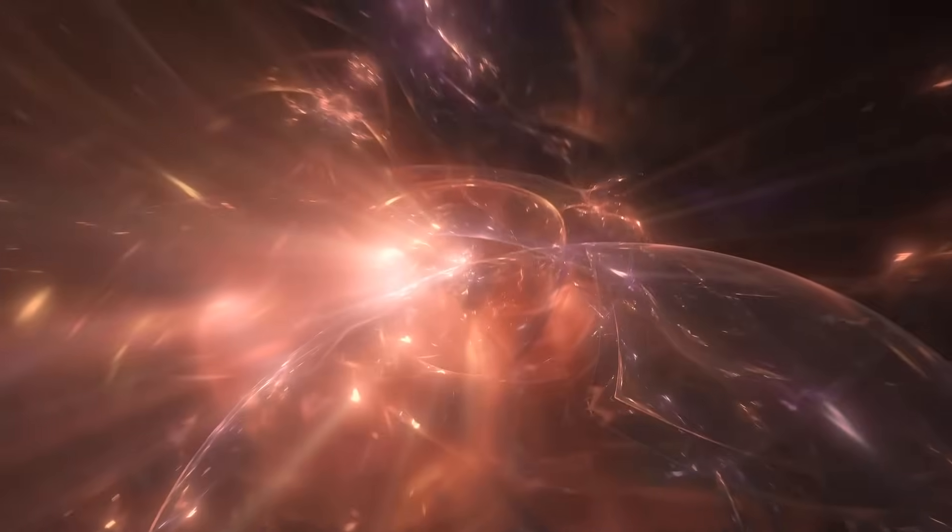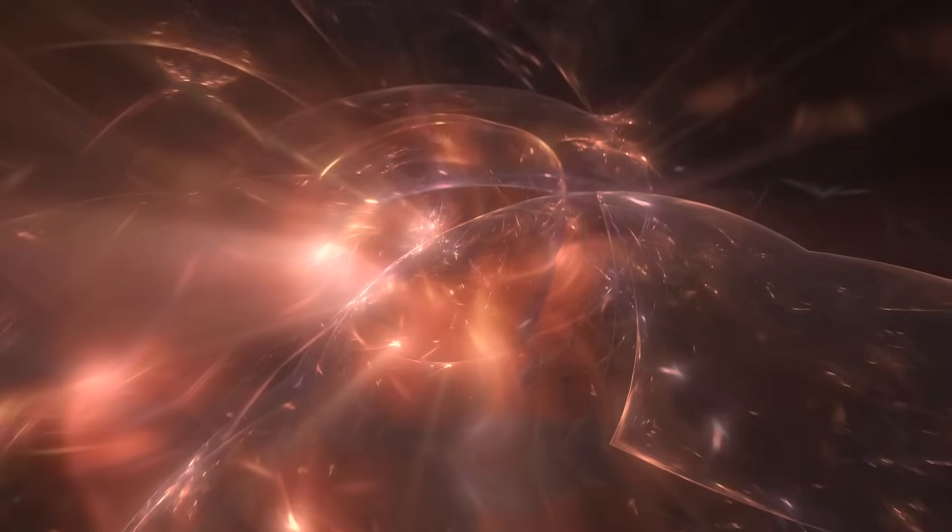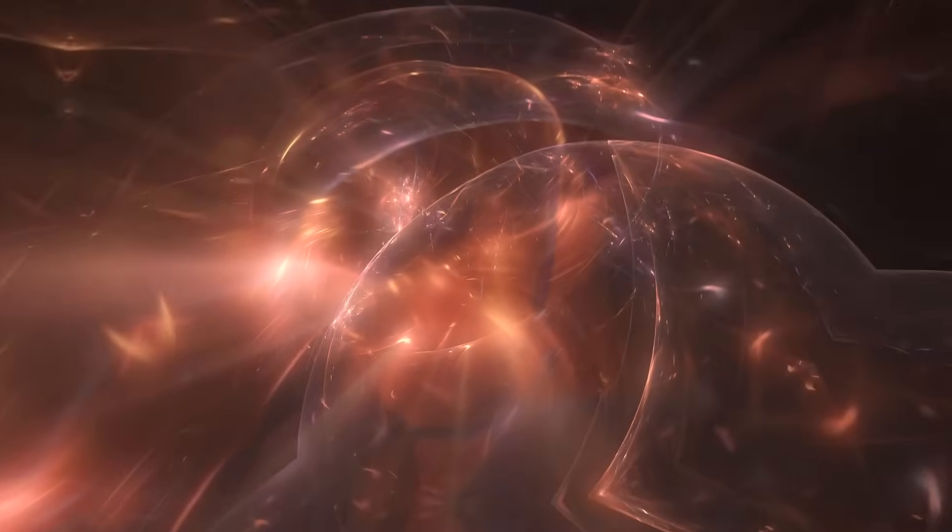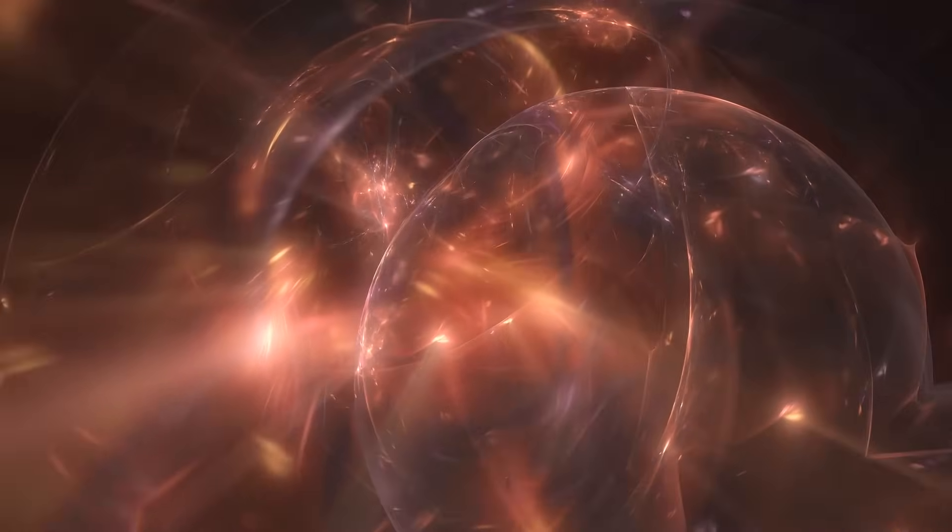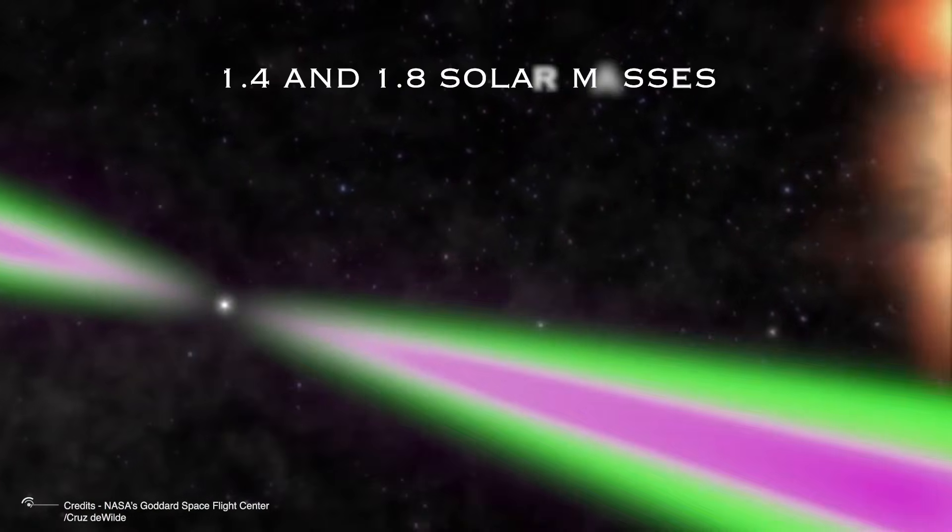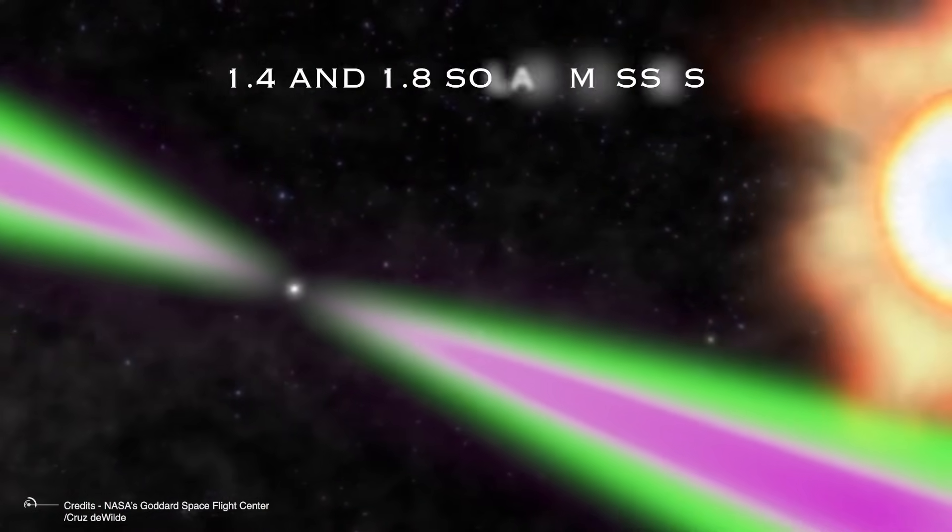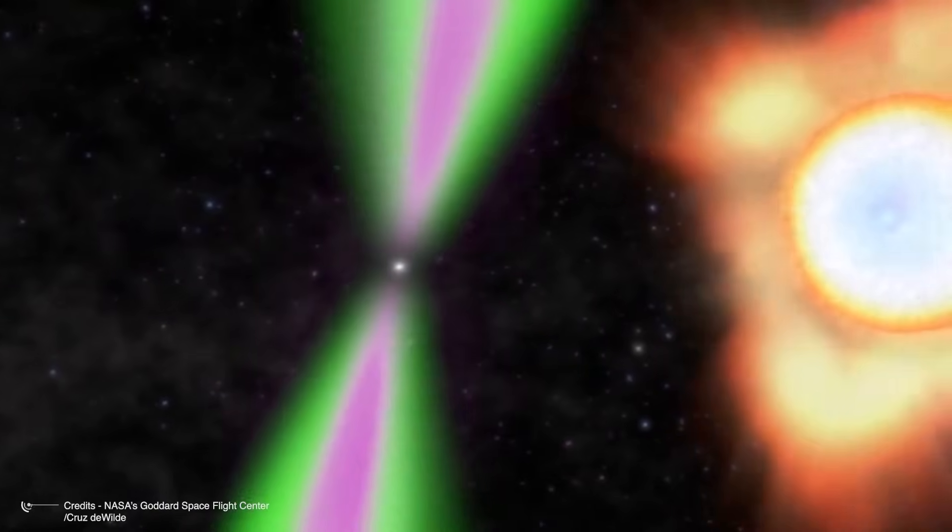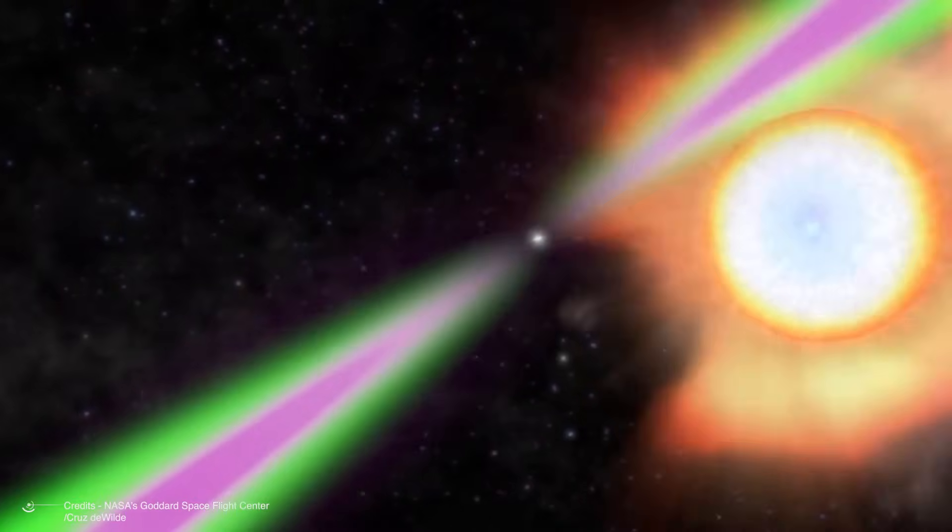What makes this particular Black Widow system unique is the already extreme mass of J0952-0607. Most neutron stars in similar binary systems weigh between 1.4 and 1.8 solar masses, giving them substantial headroom before reaching the theoretical collapse threshold.